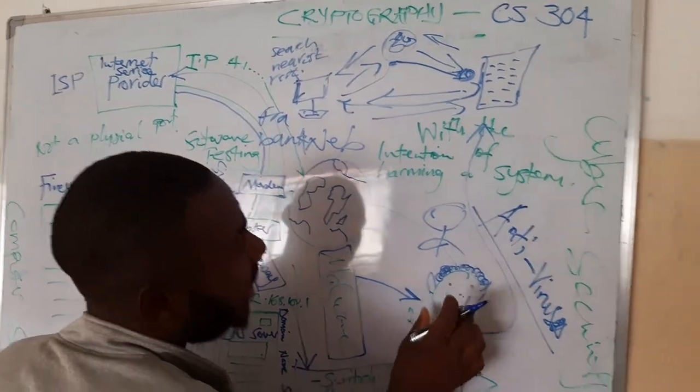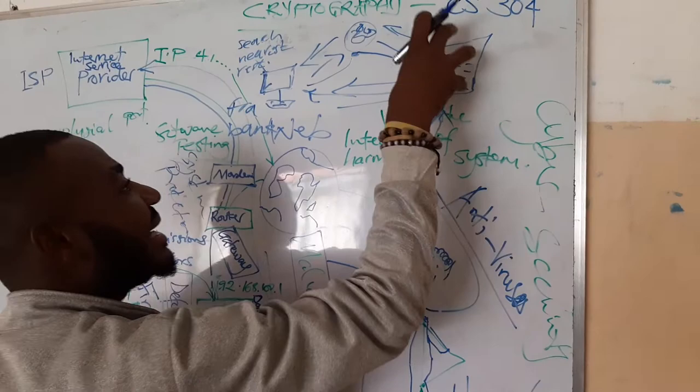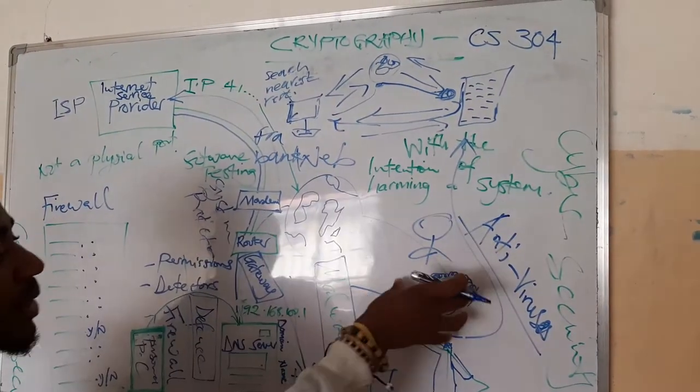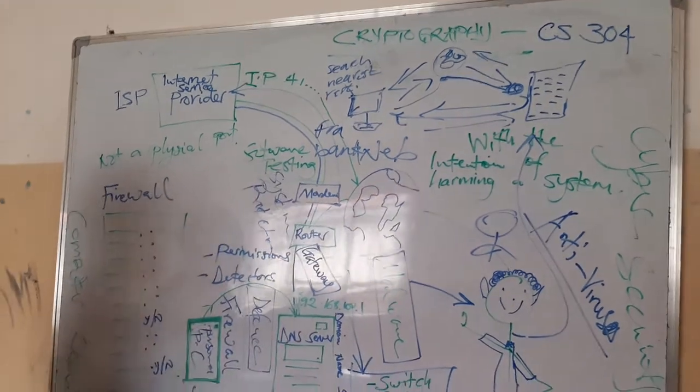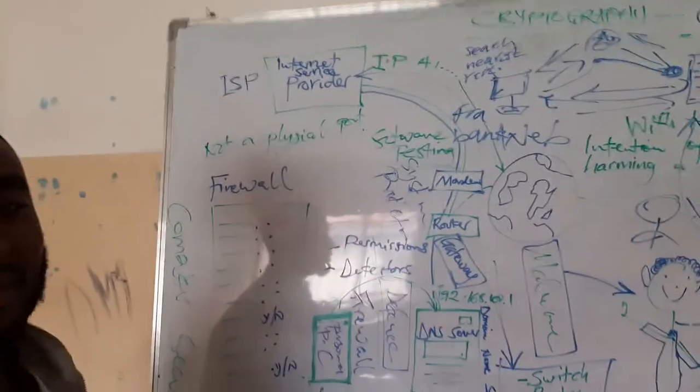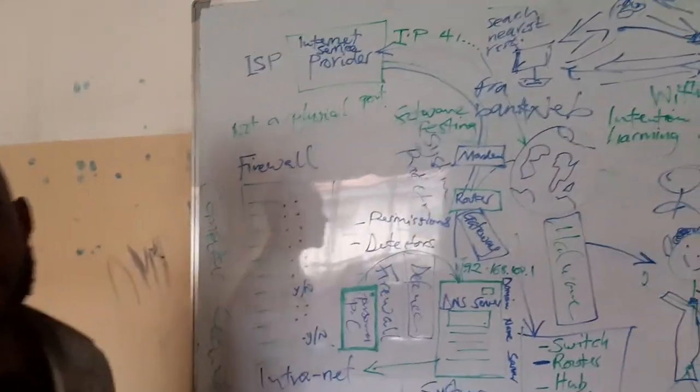This one, he wants to steal money. At which point does he hack the servers? Or does he hack the computer? Where does he go? Where is he called a hacker? That was my question. What's going to happen? Alright, let's answer the question.